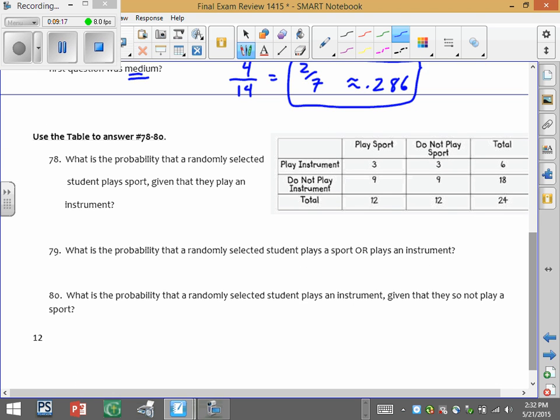Make sure that you're good with using these tables. These are important that you can pull all sorts of different probabilities from them. So we look at this table. It looks like some kind of connection maybe between sports and instruments. So what's the probability of a randomly selected student plays sport given that they play an instrument?